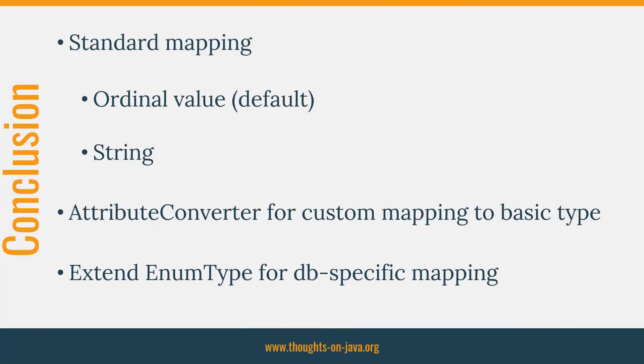With Hibernate, you can map enums in three ways. Hibernate's standard mappings provide a simple way to store enum values in your database — you can choose to persist the string representation of your enum value or prefer its ordinal value. The string representation is more robust, while the ordinal value is more efficient. If you need to map a legacy database or prefer a mapping that you can easily refactor, you should implement your own mapping using an AttributeConverter. JPA and Hibernate don't support any database-specific enum types; if you want to use them, you need to implement your own enum type by extending Hibernate's enum type.